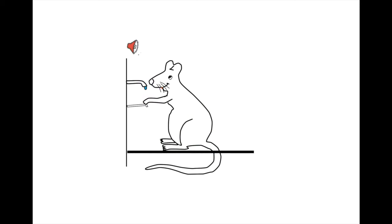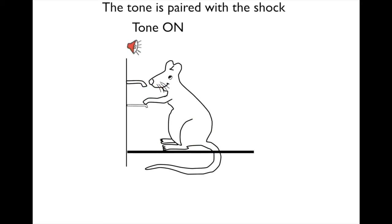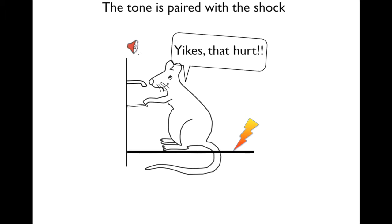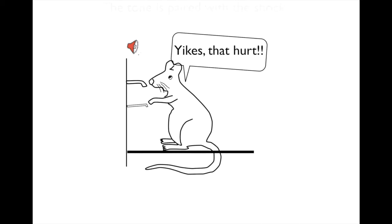The mouse is pressing the bar and receiving a liquid reward. All of a sudden, the tone comes on, and then the mouse is shocked while the tone is still on. The mouse then freezes and stops pressing the bar.